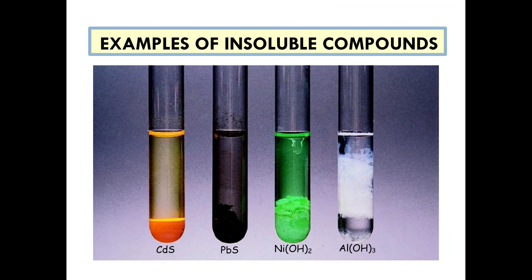This is just an example for insoluble compounds. There are many types of insoluble compounds — sometimes the insoluble compound is in a gel form, sometimes in a hard solid form, and sometimes in another form. If the precipitate does not dissolve back into the solution, we call it an insoluble solid compound. That's all for part one, thank you.